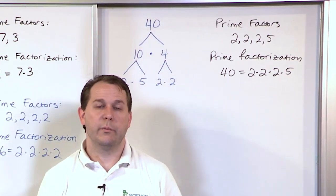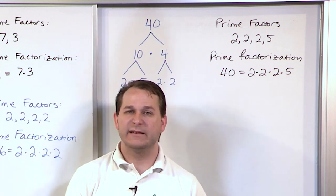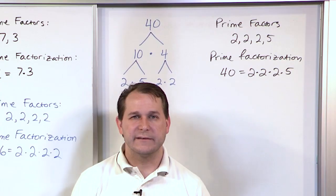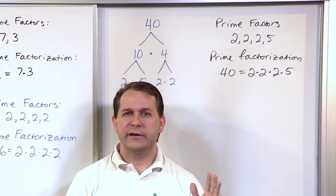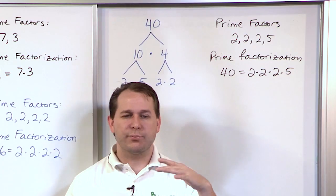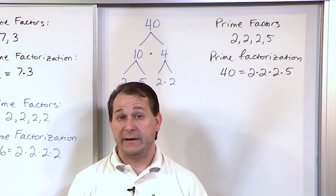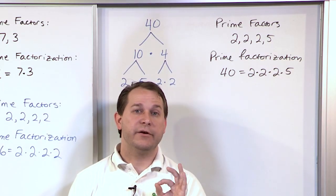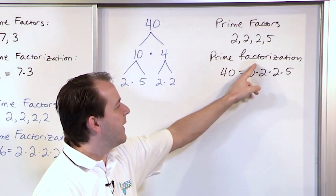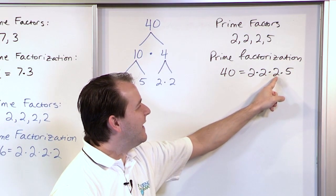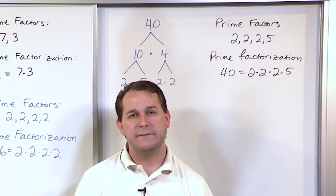That is the end of what we call prime factorization. It's a skill that comes up a lot, mostly because in fractions we're constantly finding factors so that we can simplify fractions and find common denominators. The easiest way to find prime factors is to do this factor tree — choose anything that multiplies together to give your number and keep breaking it down until you reach the simplest numbers at the bottom, which are prime numbers. Those numbers at the bottom are the prime factors, and when you multiply all of them together they're called the prime factorization. In this case, 2 times 2 is 4, 4 times 2 is 8, 8 times 5 is 40.